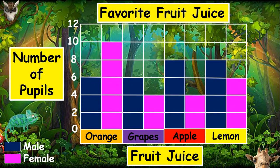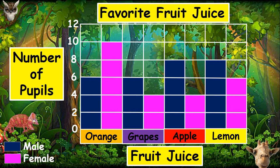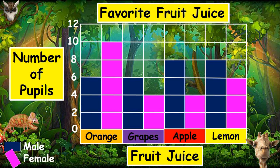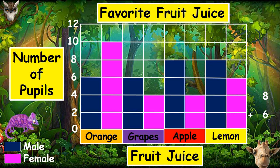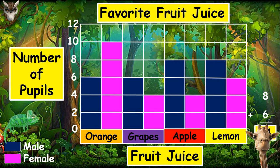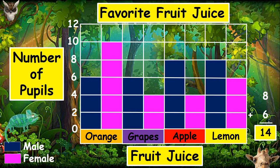Study the bar graph. The bar graph makes use of two variables: the number of males and the number of females. Can you tell how many pupils like lemon juice? As you can see, there are 8 boys and 6 girls who like lemon juice, so 14 pupils like lemon juice.